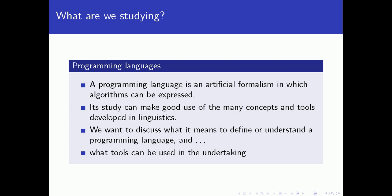Let's start with the different levels of description. But before we do that, let us recall what we are actually studying. Of course we are studying programming languages. A programming language is some kind of an artificial formalism in which we can express algorithms. We looked at earlier abstract machines and how they are connected to programming languages, but now we want to look at how we can describe individual programming languages.